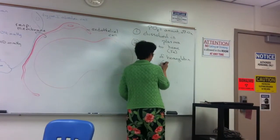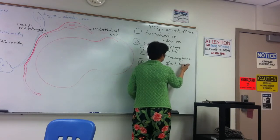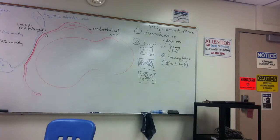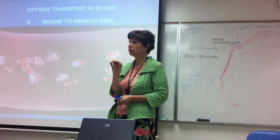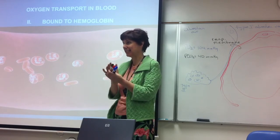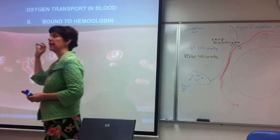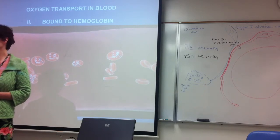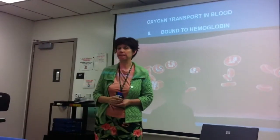We talk about percent saturation of hemoglobin — that's how we measure how much oxygen is being transported by the red blood cell. We measure the amount of oxygen dissolved in the plasma as PO2. So if someone's having their arterial blood gases measured, they're looking at PO2 or PCO2 — that's when oxygen is acting as a gas. A pulse oximeter is measuring percent hemoglobin saturation in arterial blood.